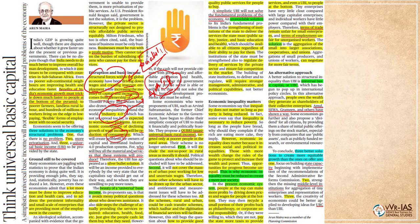Therefore, UBI — universal basic income — has appeared as a silver bullet solution. According to its proponents, the beauty of UBI is, first, it avoids messy political questions about who deserves assistance, and sidesteps the challenges of actually providing the services required. Just give the people the cash and they shall buy what they need. However, according to the author, merely giving cash will not provide citizens with good quality and affordable education and health, because neither the government nor the private sector is willing to do this. Therefore, the human development problem will not be solved by merely providing a universal basic income.